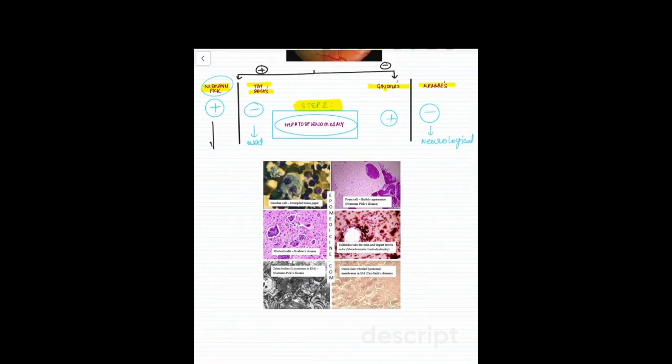For Niemann-Pick's disease, remember two histological features. First is the zebra body inclusions and second is the foam cells. On Tay-Sachs, remember about the onion skin lesions that are present.